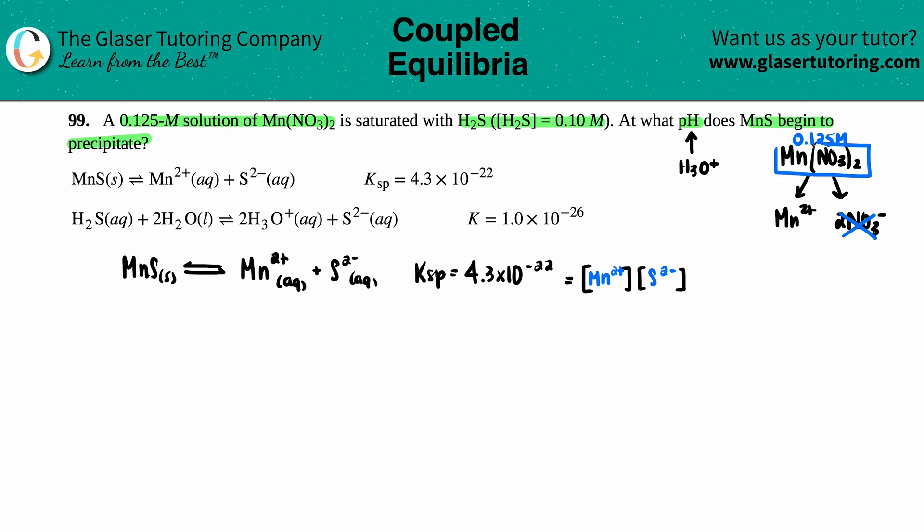And if there's one Mn(NO₃)₂ and one Mn²⁺, the molarities would have to be the same. It's a one-to-one ratio. And if I know this amount, I know this amount. So now I'm going to say I have 0.125 molarity for here.